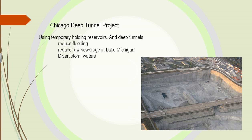Chicago has a deep tunnel project — it takes stormwater and holds it. In the past in Chicago, when there was a large amount of rain this would overflow the whole system, and that overflow would go out into Lake Michigan and pollute the lake. Now we're allowed to divert some of the stormwater into the deep tunnel.